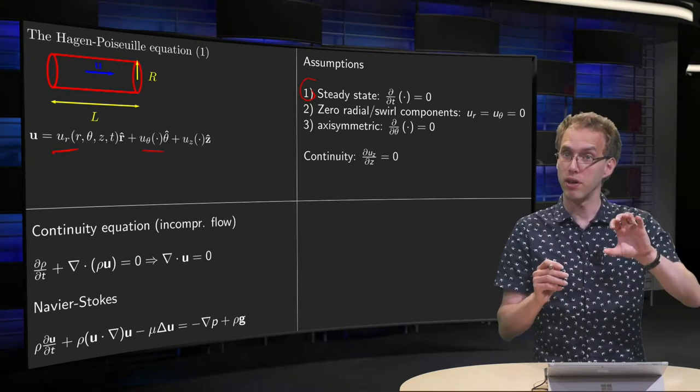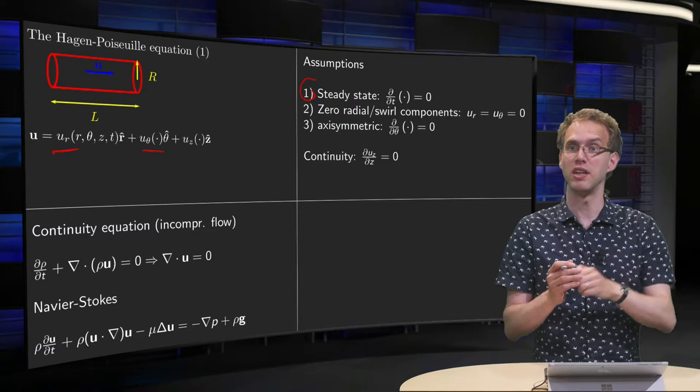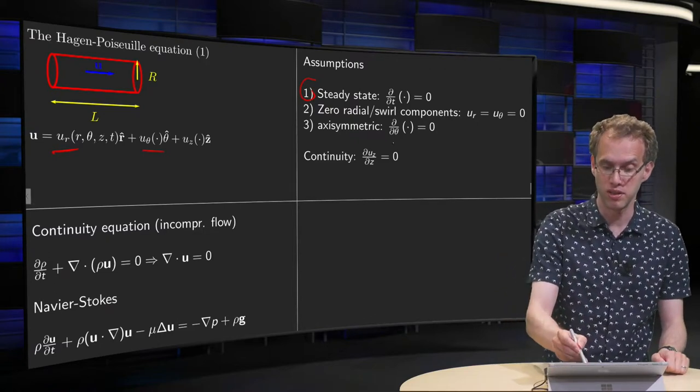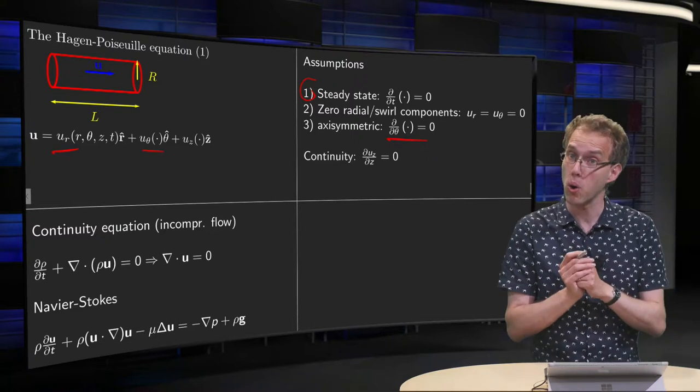And then furthermore we assume rotational symmetry, so that our flow is rotationally symmetric, so the theta derivatives are also zero.